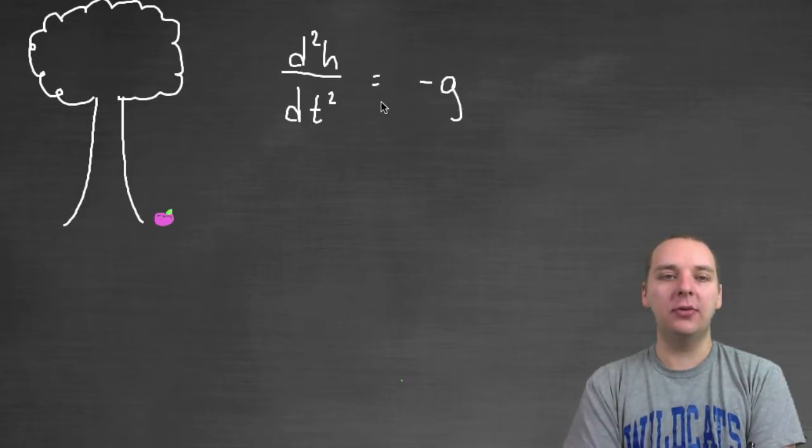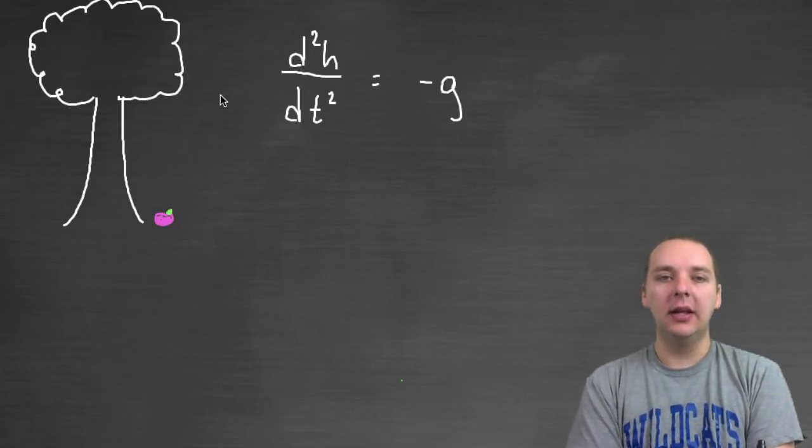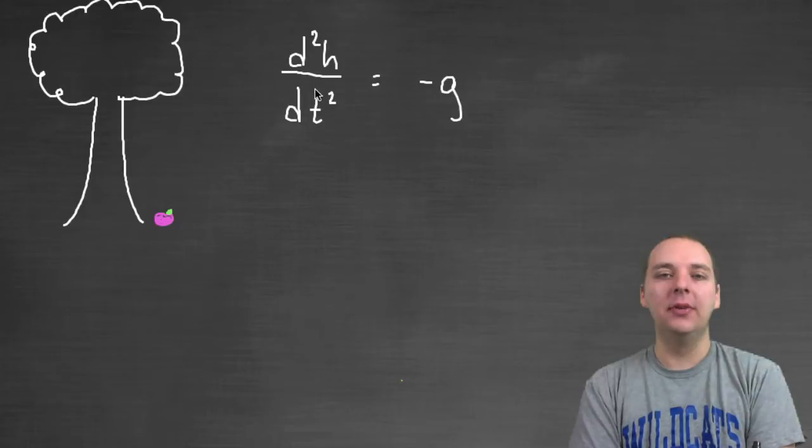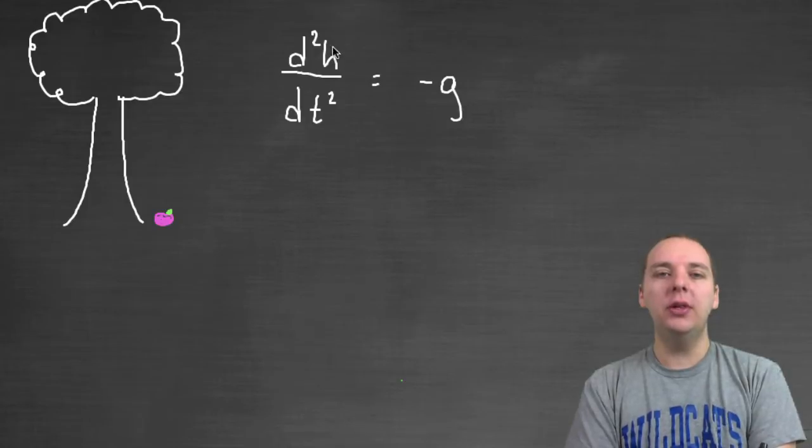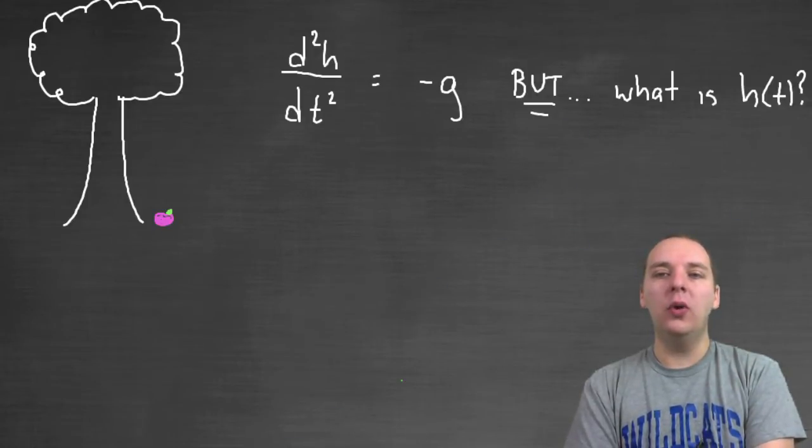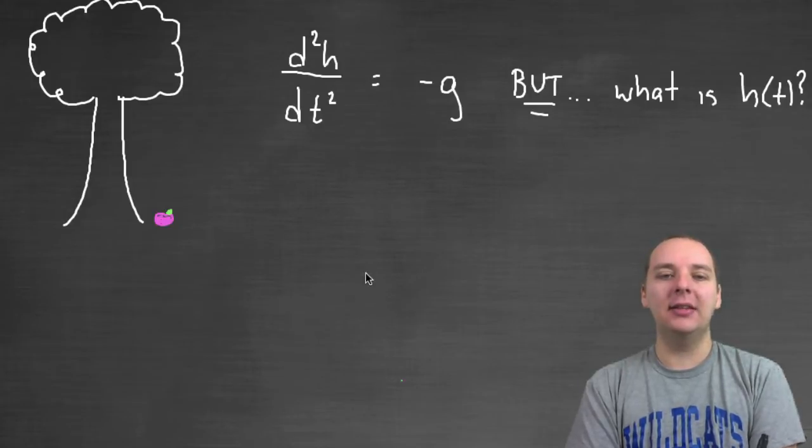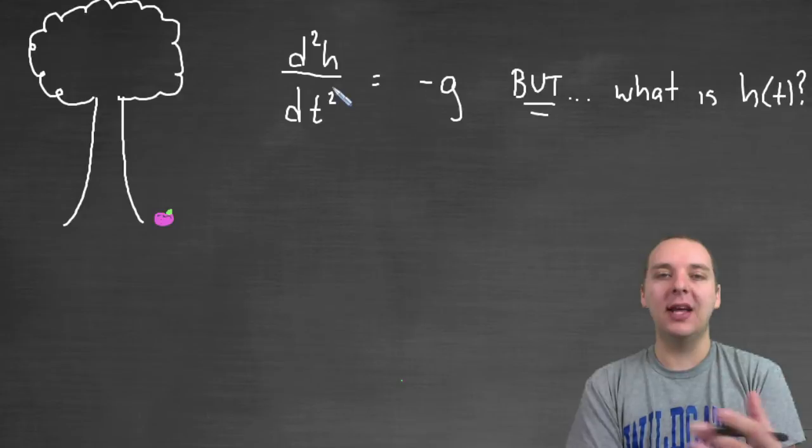It's an equation that we observe based off of a real life event that contained a derivative. But now, what's our goal? What are we trying to do here? We're trying to figure out who the original function is. That's really our goal. What is h(t)? That's what we're actually after. What's the original function that models the height of the apple at a given time?